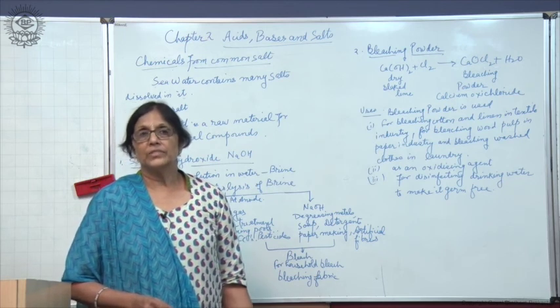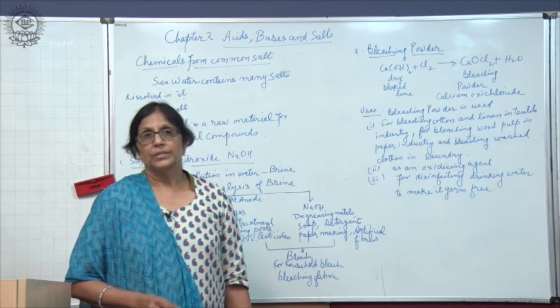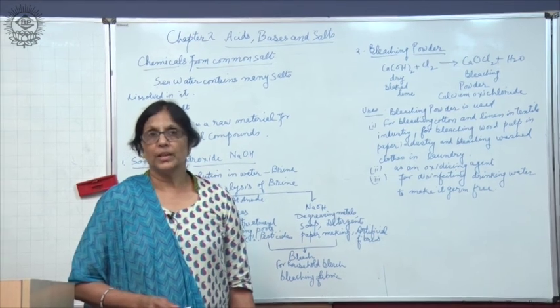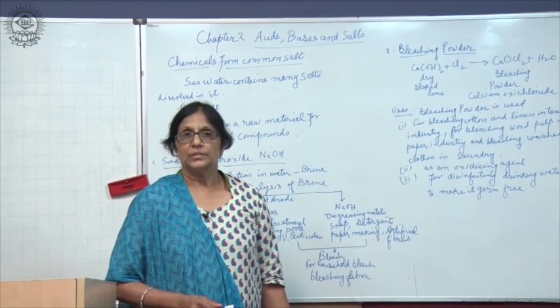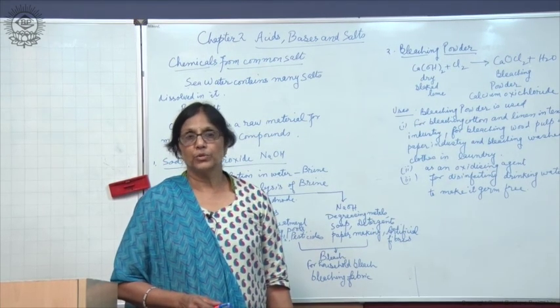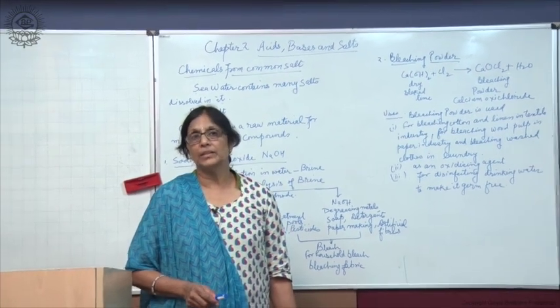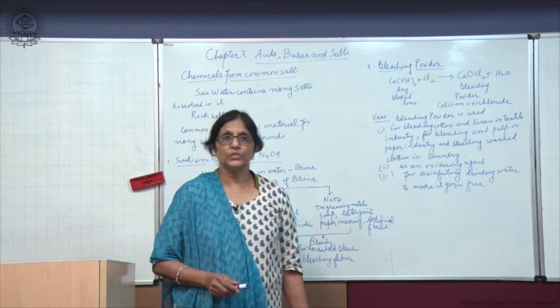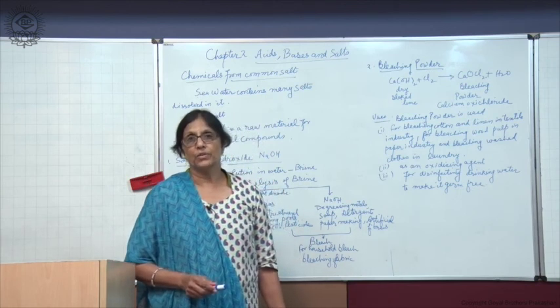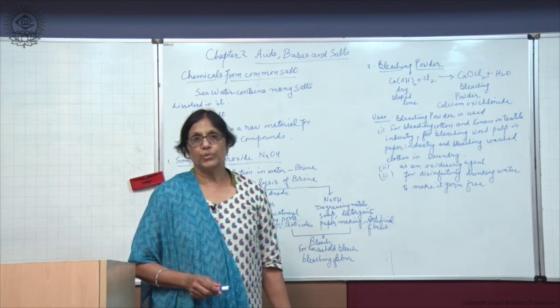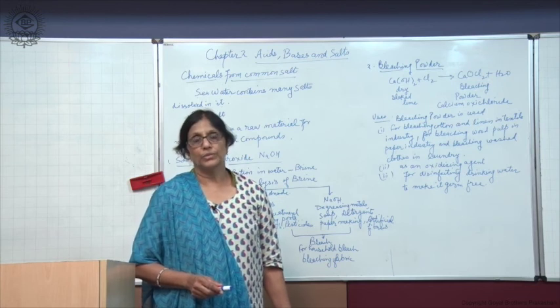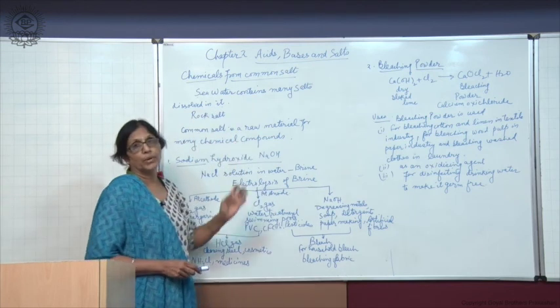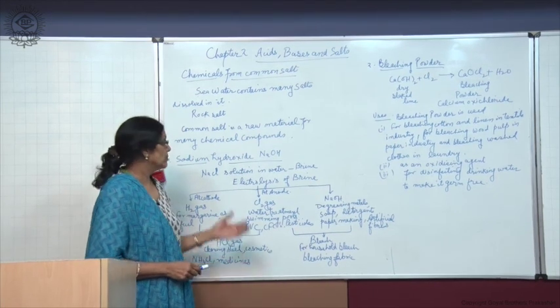From seawater, NaCl can be extracted just by storing the seawater somewhere so that water evaporates, leaving behind the salts. The salt obtained like this is called rock salt, which is brown in color due to the presence of impurities, which can be purified to get common salt. Common salt is a raw material for many chemical compounds.